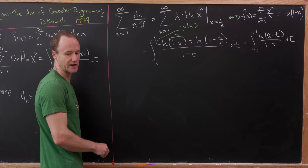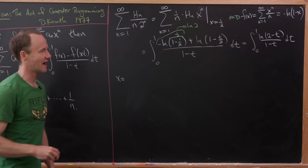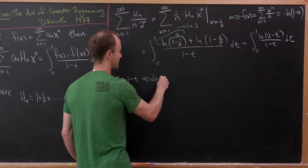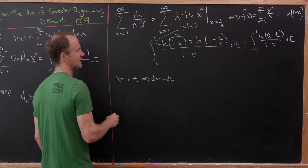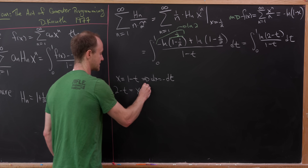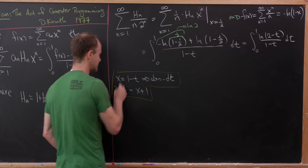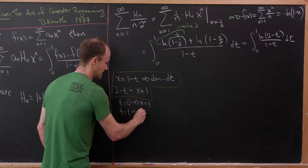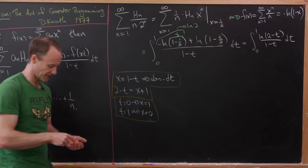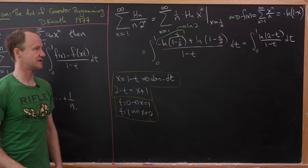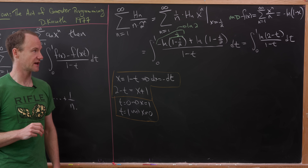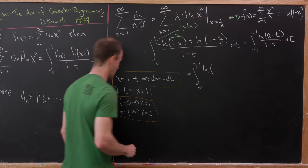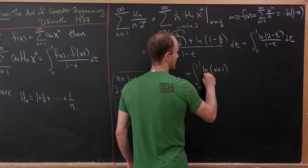Now we make a substitution, setting x equal to 1 minus t. Then dx equals minus dt, and 2 minus t equals x plus 1. When t equals 0, x equals 1, and when t equals 1, x equals 0 — this switches the bounds of integration. But the minus sign in dx switches them back, so we end up with the integral from 0 to 1 of the natural log of (x plus 1) over x dx.